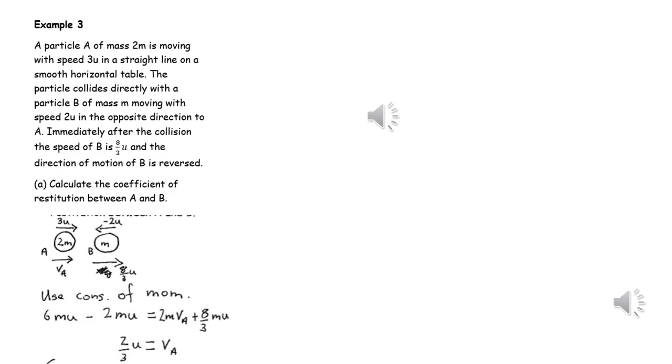We can first of all consider the collision between A and B and use conservation of linear momentum to get an expression for the velocity of A after the collision, and then we can apply Newton's law of restitution to work out the value of E.